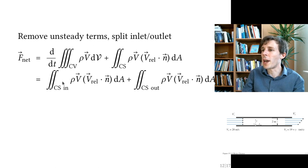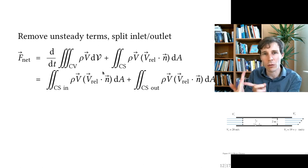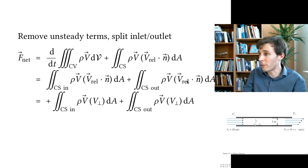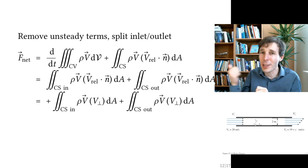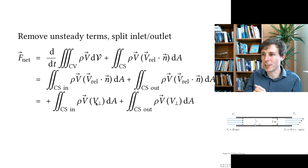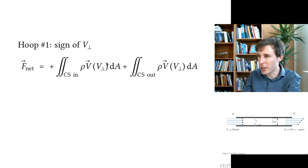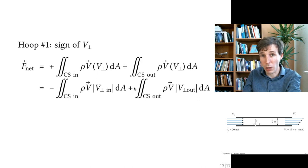We split the equation into inlet and outlet terms. The key quantity is v_rel dot n — the dot product of the velocity relative to the control surface and the outward unit normal vector n. This is a scalar, which we call v_orthogonal. Hoop number one: v_orthogonal is by definition negative for incoming flow and positive for outgoing flow. So when substituting absolute values, a minus sign appears for the inlet term and a plus sign for the outlet term.